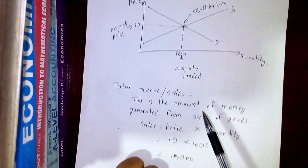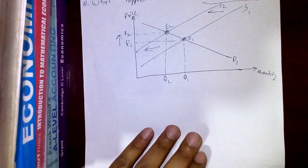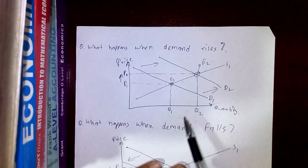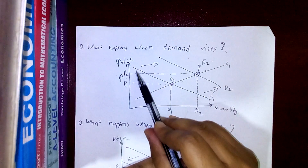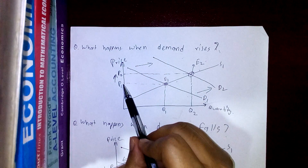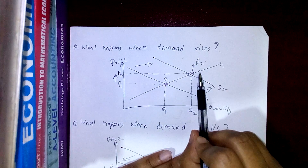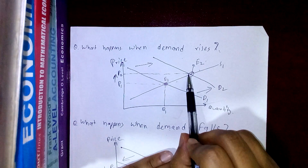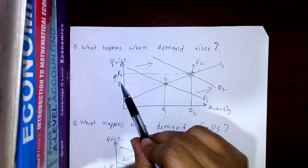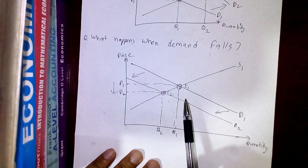When supply decreases, the supply curve shifts leftward, changing the equilibrium from E1 to E2, and the price goes up. This is all we need to know about equilibrium. The price you pay for a product is set by the interaction of the demand and supply curves, which is the market price. Revenue is calculated by multiplying price by quantity supplied.